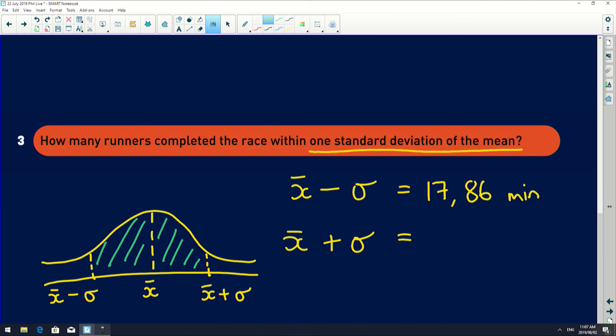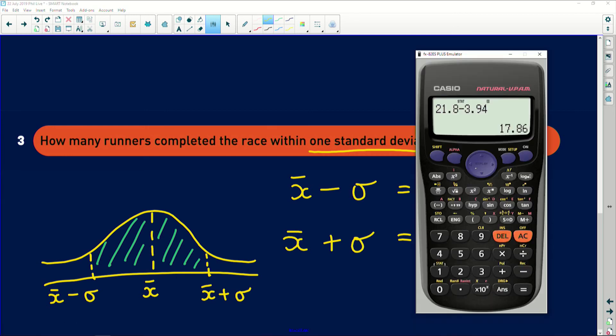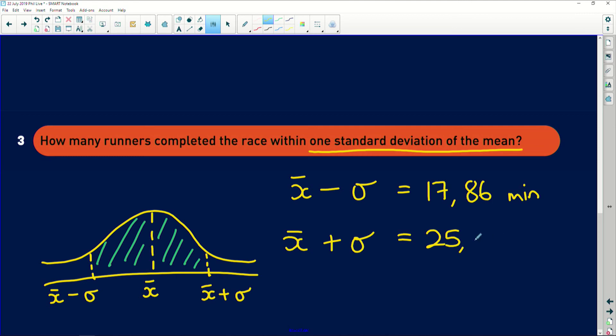Now, to add them, what you can simply do on your calculator is press this back arrow, delete the subtract, add in a plus, and then equals, and you get 25.74. Okay. So now, we need to look how many runners times lie between 17.86 minutes and 25.74 minutes.